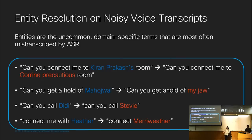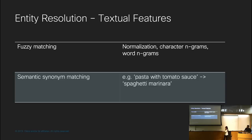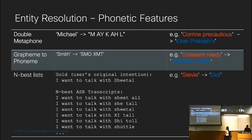For entity resolution we have a few broad categories of features. The first is text-based features, including fuzzy matching — normalization using character n-grams and word n-grams to do fuzzy matching between the text and the canonical forms, accounting for minor spelling variations and typos. We also have semantic synonym matching, using a predefined set of semantic synonyms like 'pasta with tomato sauce' for 'spaghetti marinara,' matching against these semantic synonyms as well as common nicknames and aliases.